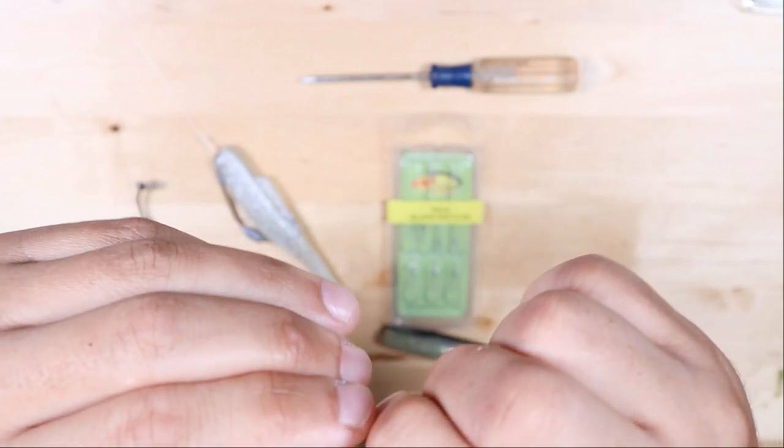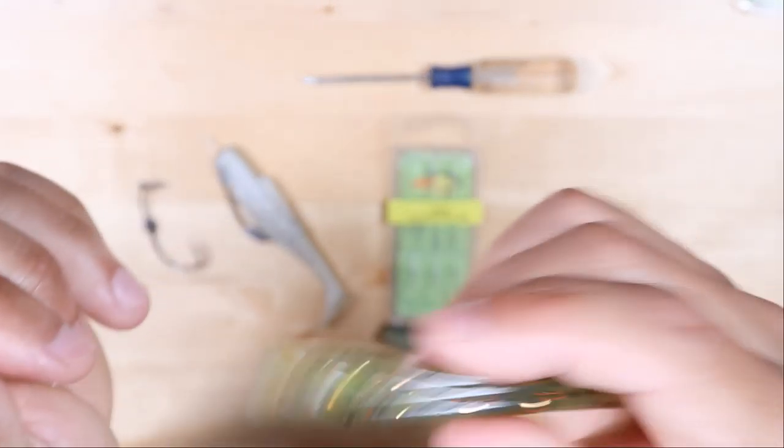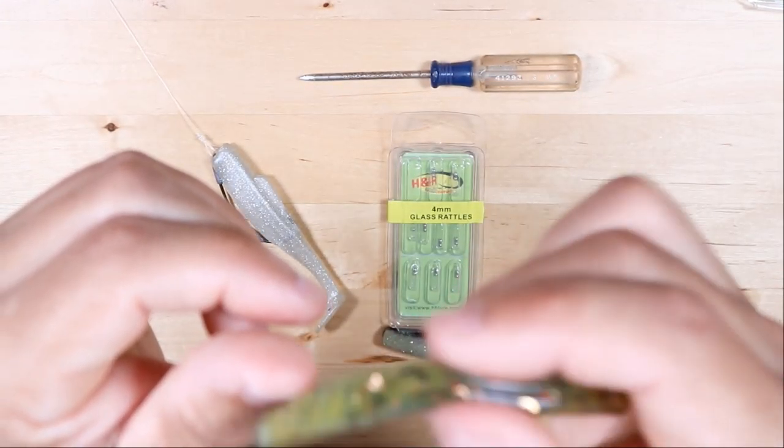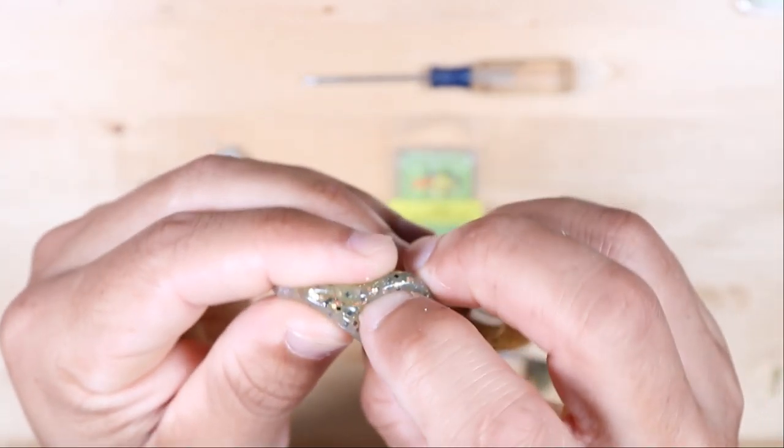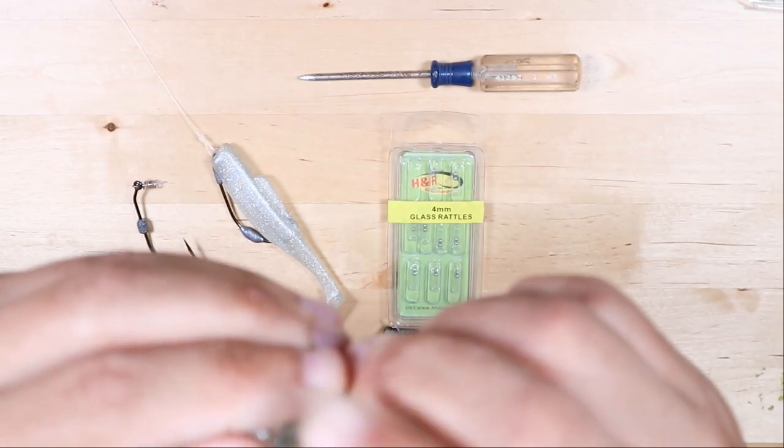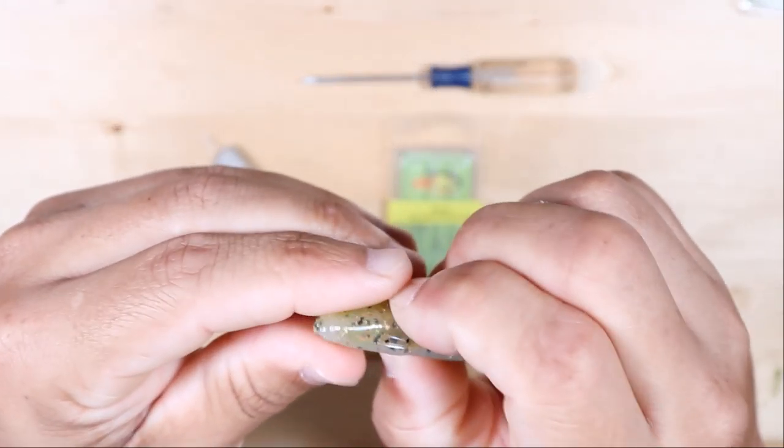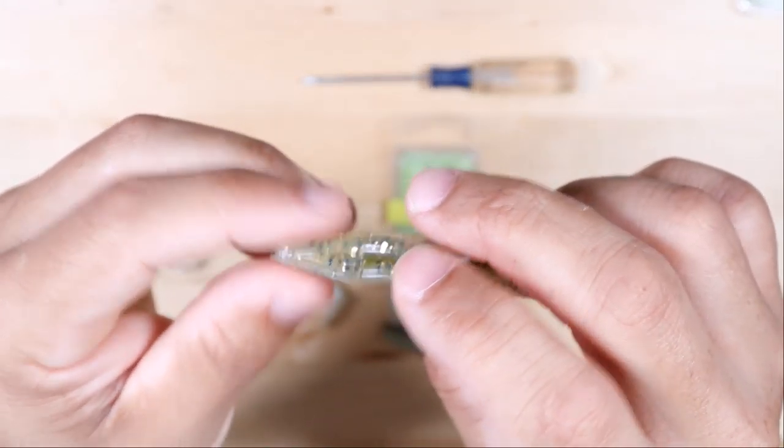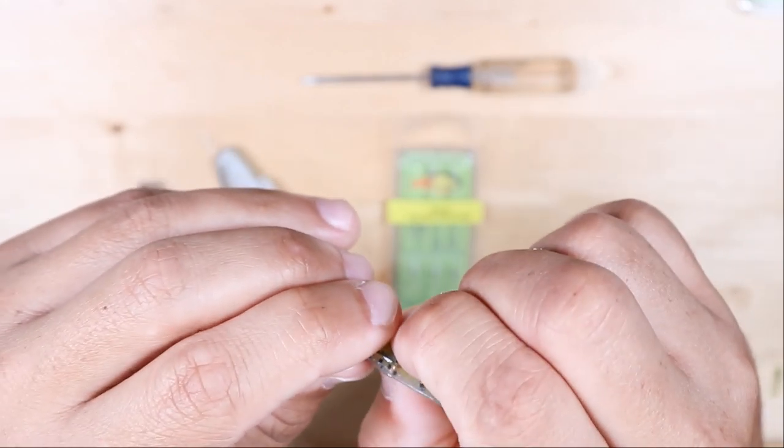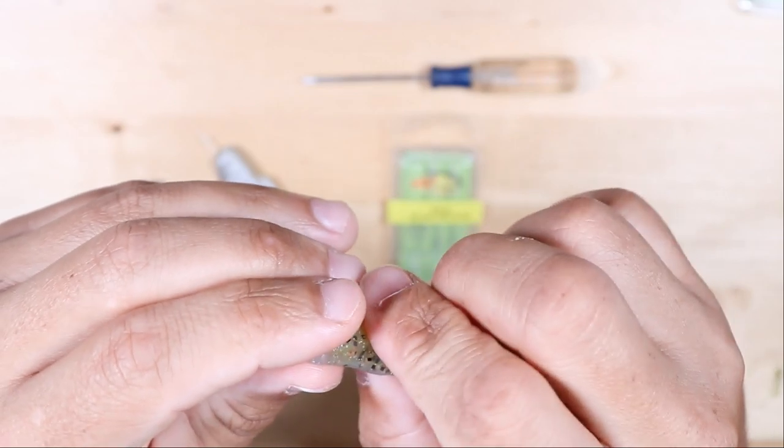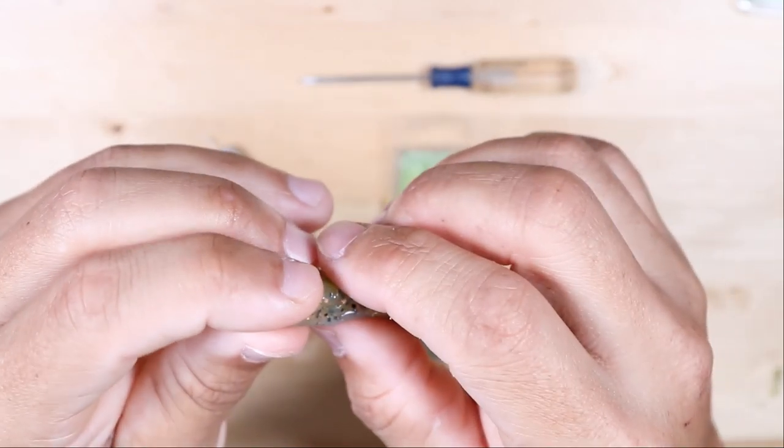As you can see there, it's in the lure now. You have a rattle in there and it's not sticking out. You don't want it to be sticking out because that will increase the chances of it actually coming out of your lure or falling out. Make sure it's pushed up all the way in there and that the plastic kind of forms back behind it to keep it locked in.